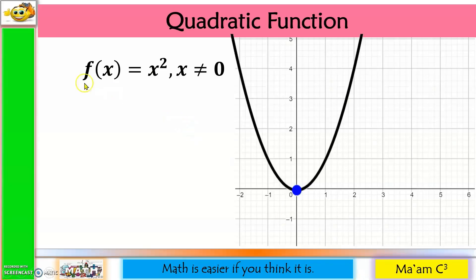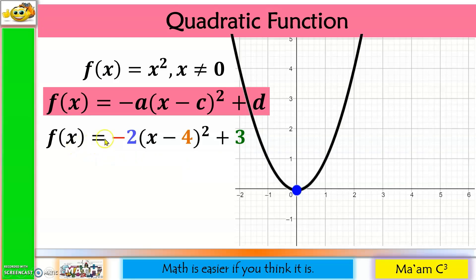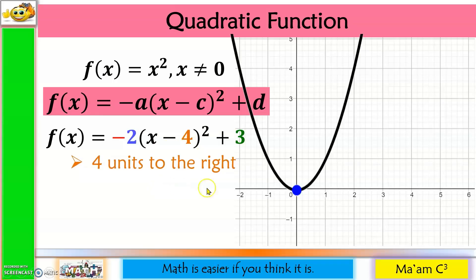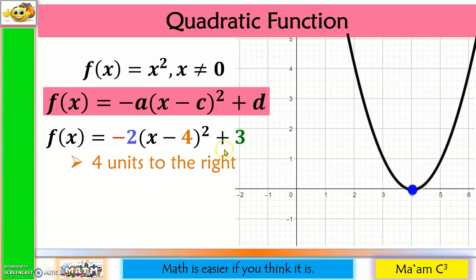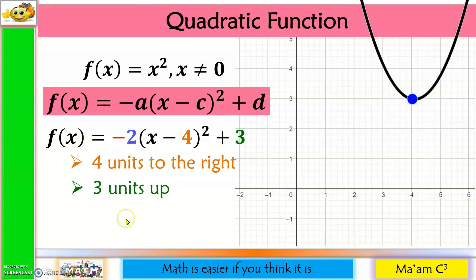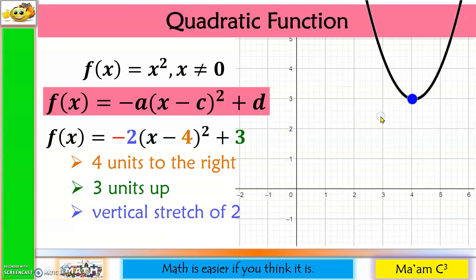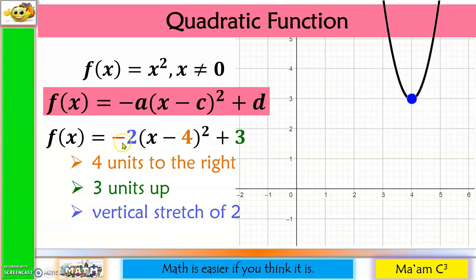For the quadratic function, consider f(x) = -2(x - 4)² + 3. Step by step: minus 4 moves the graph 4 units to the right, so the vertex is at (4, 0). Plus 3 moves it 3 units up, so the vertex is now at (4, 3). The factor of 2 vertically stretches the graph by a factor of 2. Finally, the negative sign reflects the graph on the x-axis, making it face downward.